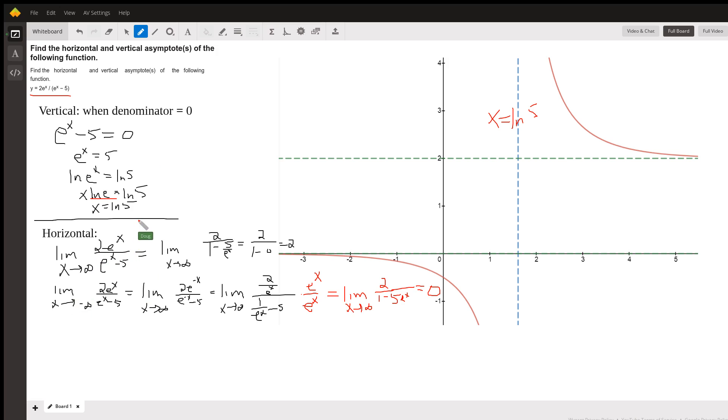For this function involving e^x, if I divide numerator and denominator by e^x, I get 2 over 1 minus 5 over e^x. And as x approaches infinity, this fraction right here approaches zero because e^x itself approaches infinity as x approaches infinity.